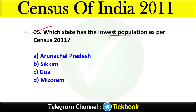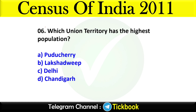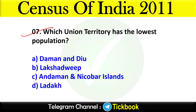Question five: Which state has the lowest population as per Census 2011? Option number B is the right answer: Sikkim. Question six: Which union territory has the highest population? Option number C: Delhi. Question seven: Which union territory has the lowest population? Option number B: Lakshadweep.